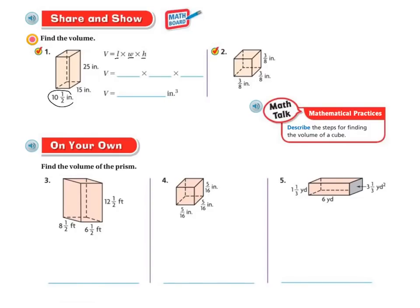So I've got volume equals, my length on this one is 10 1/2. And my width is 15 and my height is 25. So all I do is I multiply. 10 1/2 by 15 by 25 is going to give me my volume.